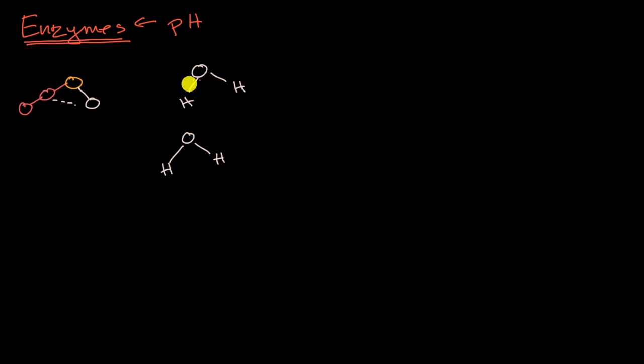In water, you have these covalent bonds between the oxygen and the hydrogen, so arguably they're sharing the electrons, but because oxygen is more electronegative, it likes to hog the electrons more. The electrons spend more time around the oxygens, so the oxygen end of a water molecule gets a partially negative charge, and then the hydrogen ends of a water molecule get a partially positive charge.